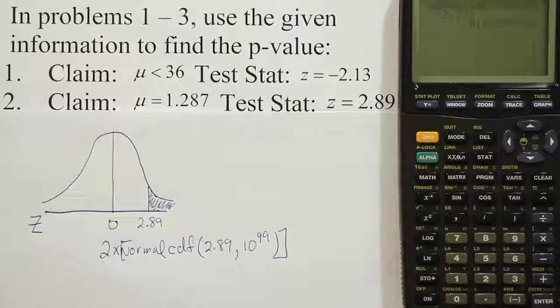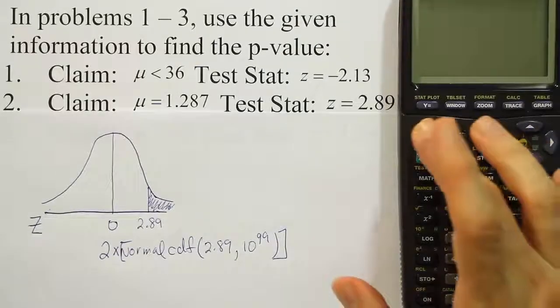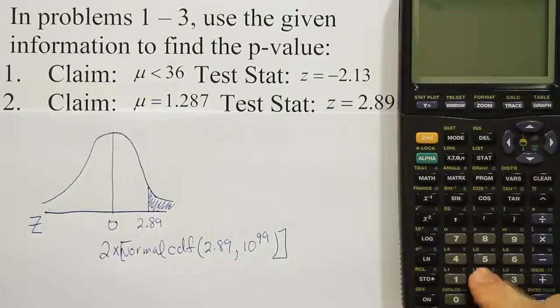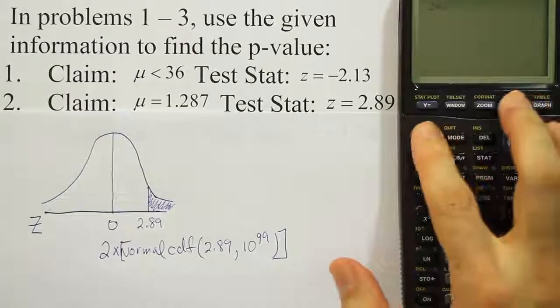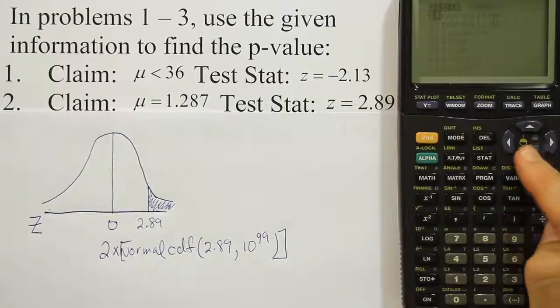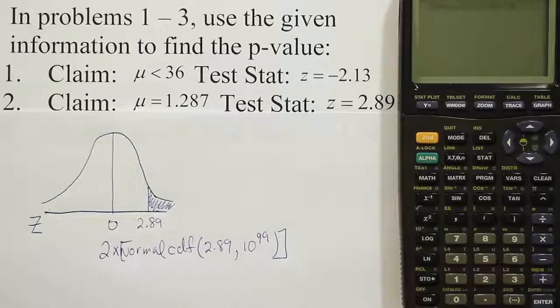So in our calculator, we just have to do it that way. So we're going to do 2 times. 2 times. Then, second vars. Going down to option 2, which is normal CDF.